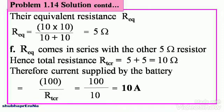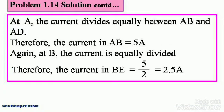This is the total resistance of the entire circuit. Therefore current supplied by the battery is V/R by Ohm's law, so it is 100 divided by Rtcr, which gives you 100 by 10, and that is 10 amperes. You have solved the first portion of the problem.